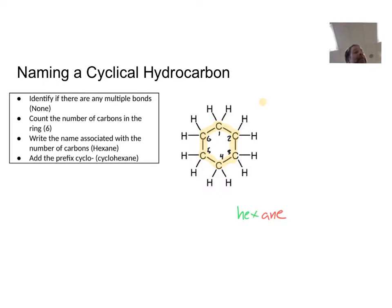And the fact that it does not have any branches on it means I don't have to worry about the branches. So I'm simply going to go ahead and now add the last thing, which in this case is a prefix for cyclo. So it's cyclohexane.